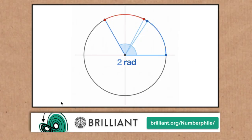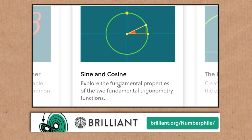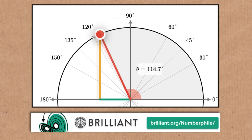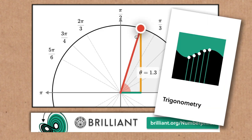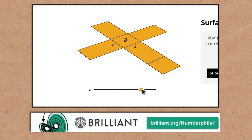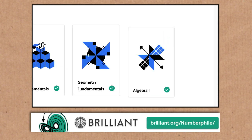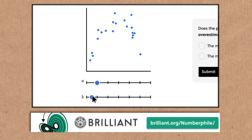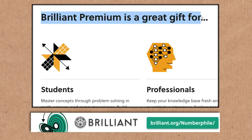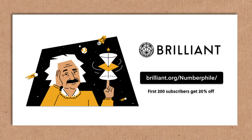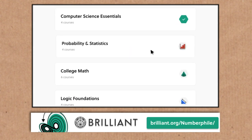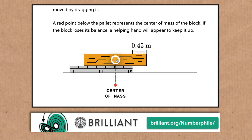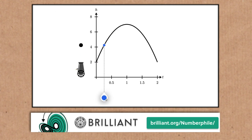To brush up on all things angle-related with trigonometry, check out Brilliant. Their courses are interactive and cover sine, cosine, and tan in a way that's really engaging. Brilliant is bursting with courses, lessons, and questions, and they're adding more all the time. You can give Brilliant as a gift — there's a 20% discount when you sign up at brilliant.org/numberphile, which is in the description. They also have a 30-day free trial, and the team there is passionate about making people smarter.